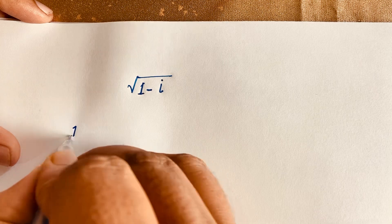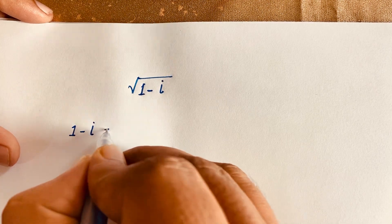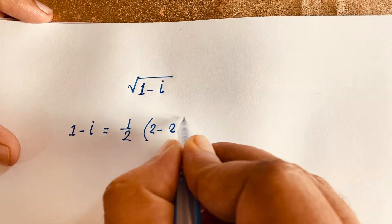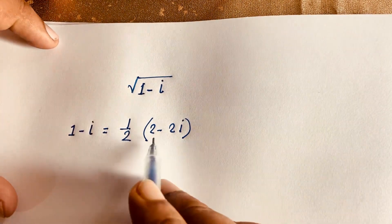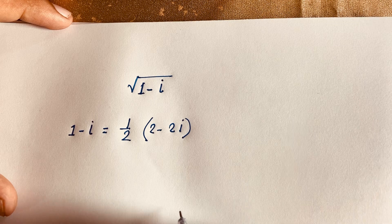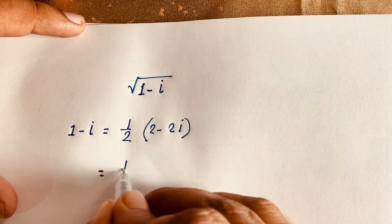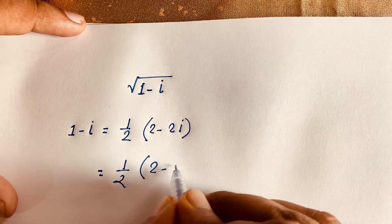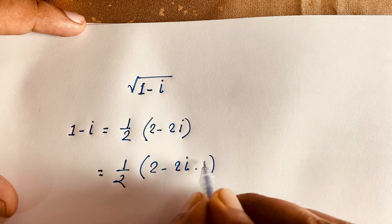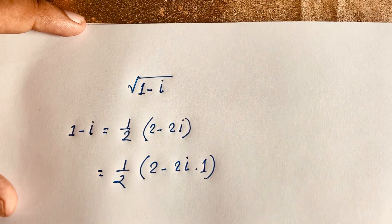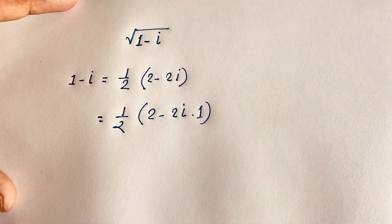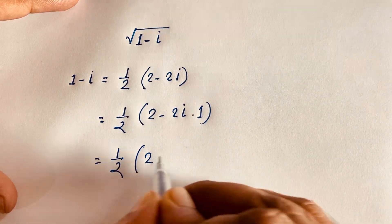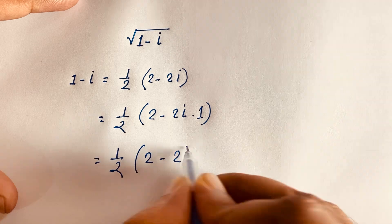First I take (1 minus i) and multiply both numerator and denominator by 2, then divide by 2. This expression becomes 1 over 2 times (2 minus 2i).